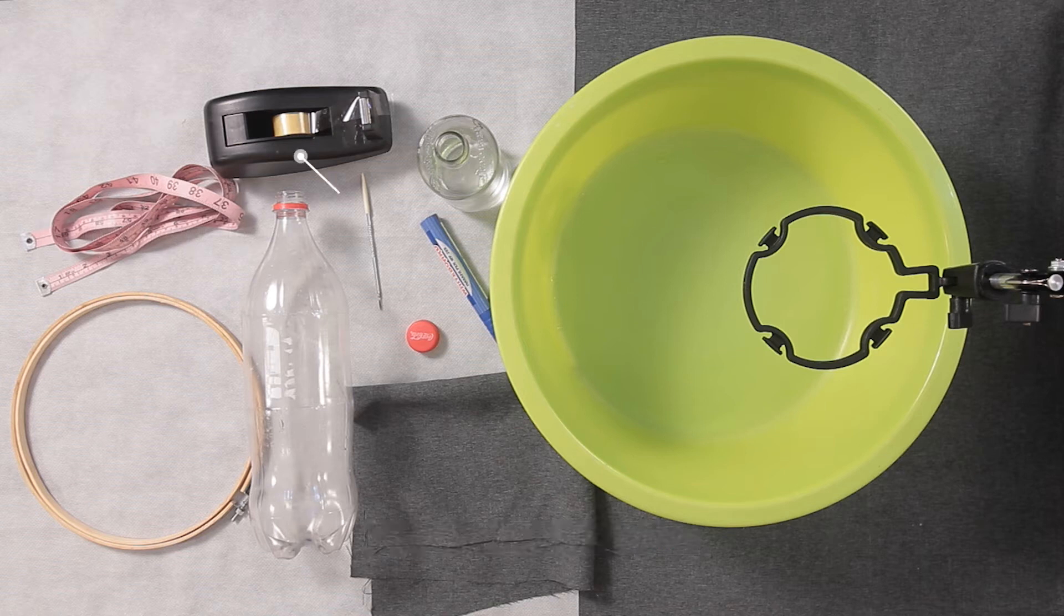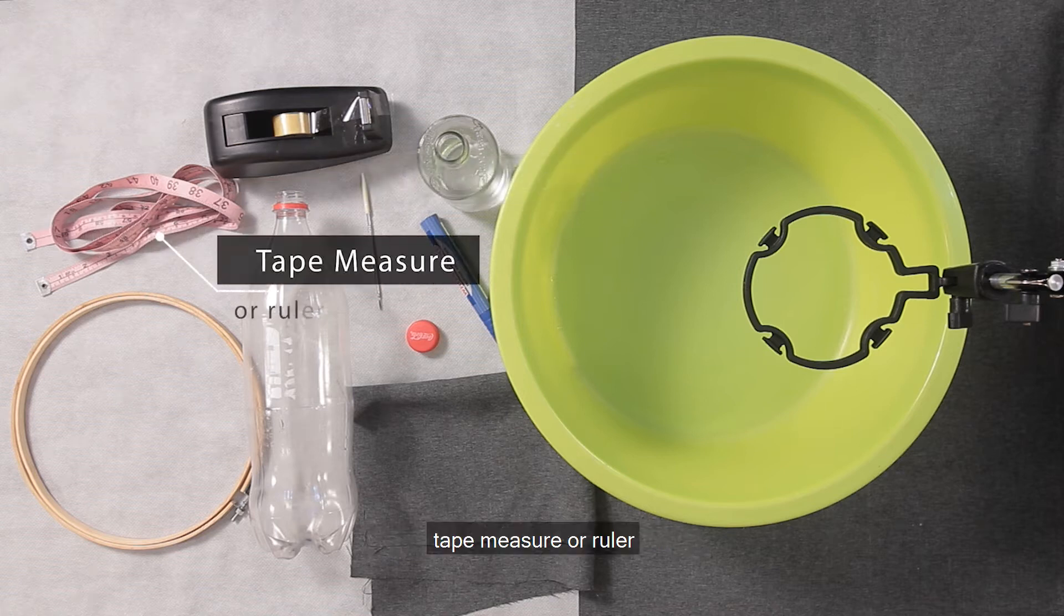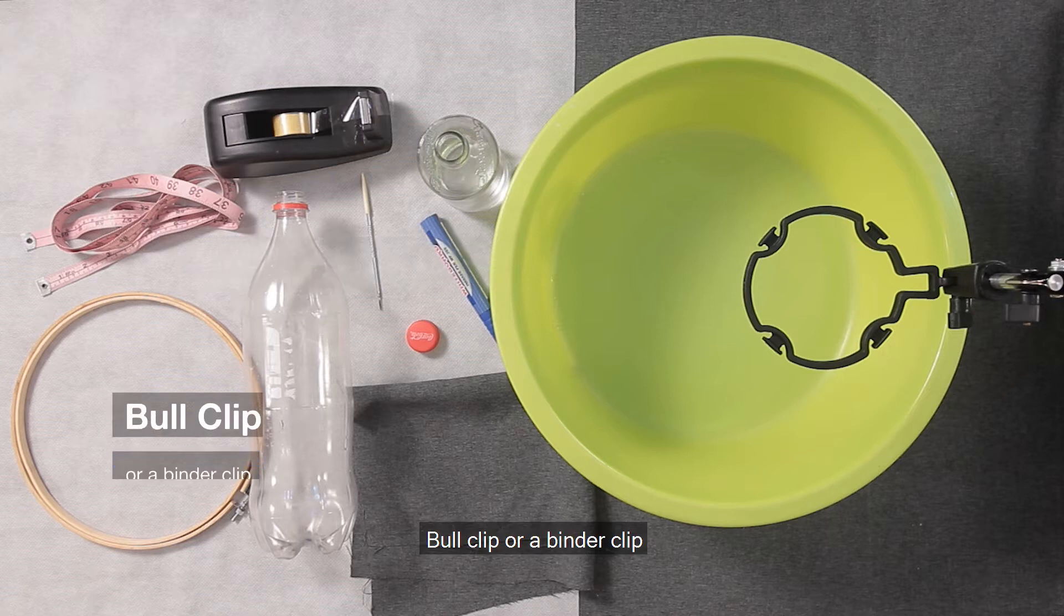You'll also need an embroidery hoop to hold the fabric, scotch tape, tape measure or ruler, and a bull clip or binder clip.